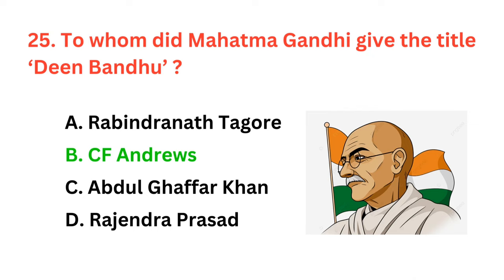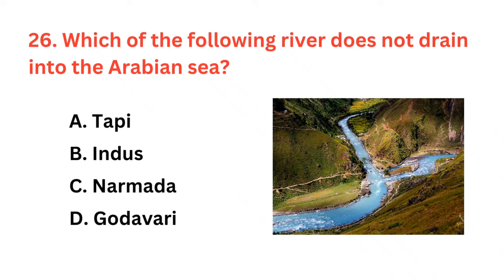Which of the following rivers does not drain into the Arabian Sea? The correct answer is option D: Godavari.